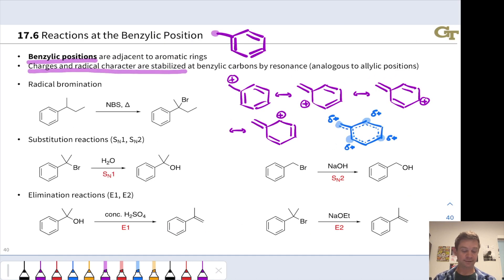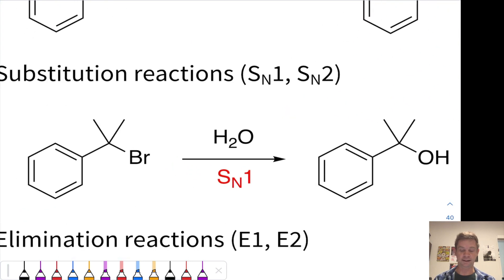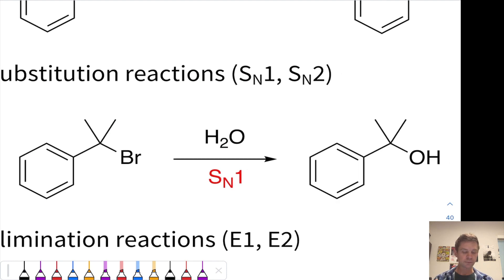SN1 and SN2 substitution occur rapidly at benzylic positions. So for example, this tertiary alkyl halide, really a benzylic bromide, reacts rapidly in SN1 with water, even under neutral conditions, because the benzylic cation is relatively stable.